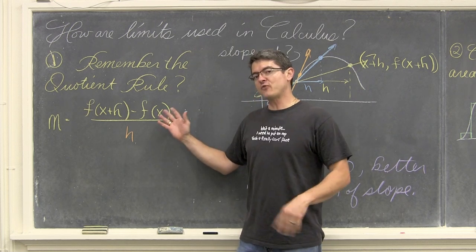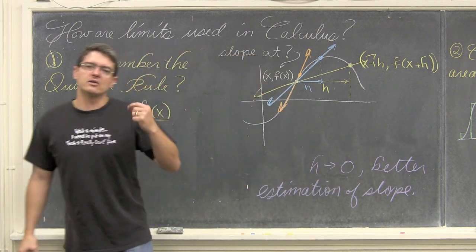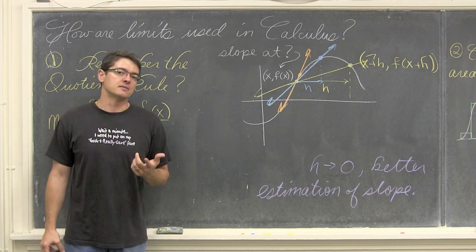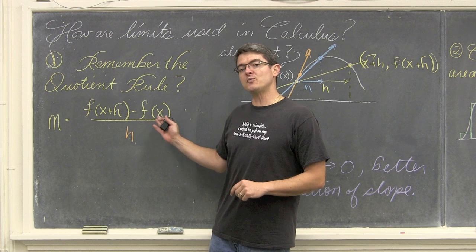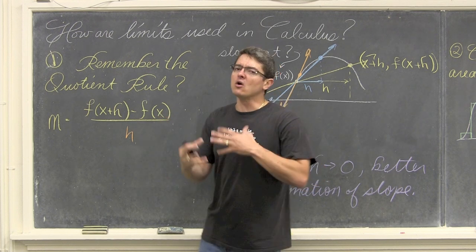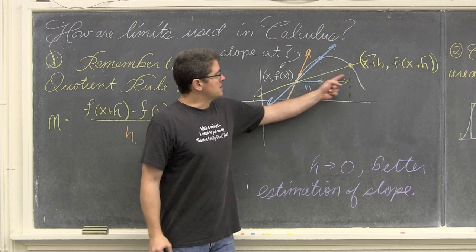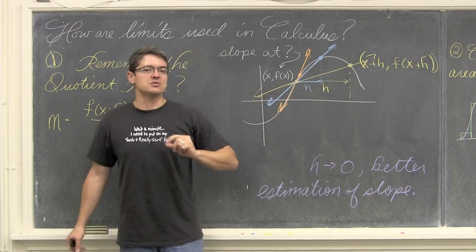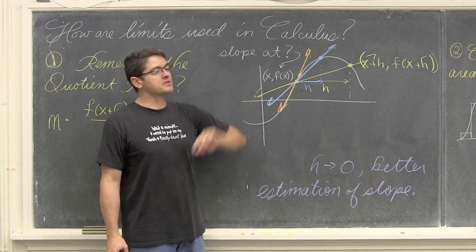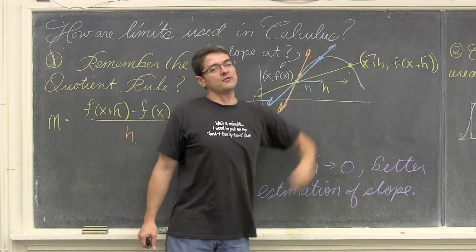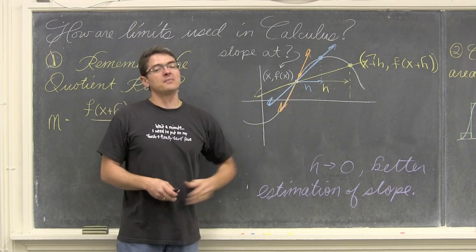Basically if this denominator is 0.000000000001, this fraction is still defined. So that is why we are learning an introduction to limits in this discussion — because it is going to allow us, with the old formula of slope that you learn in algebra 1, along with this idea of a limit and allowing the distance between these two points to approach zero, calculus is going to allow us to find something called a derivative, which will allow us to find the slope of a curved line along any given point or any given x value.